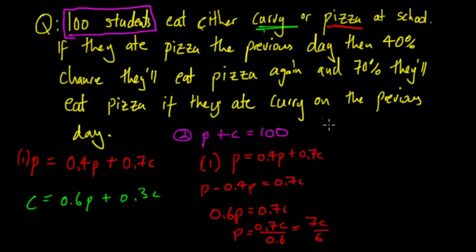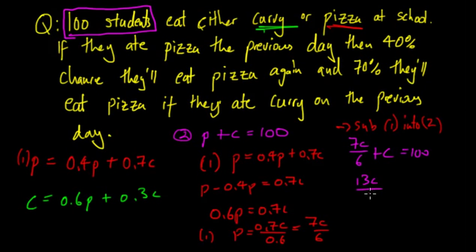Then we sub this into 2. So this is equation 1, we've derived 1 down to here. Then we say sub 1 into 2. p equals 7c over 6, so we get 7c over 6 plus c equals 100. So we get 13c over 6 equals 100. So c is equal to 600 over 13.